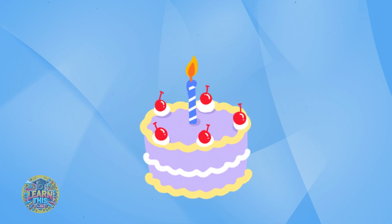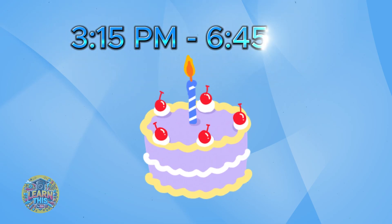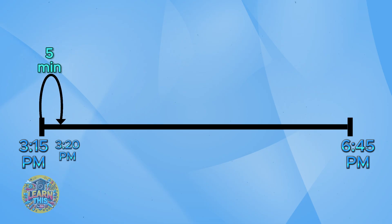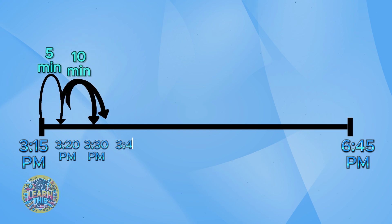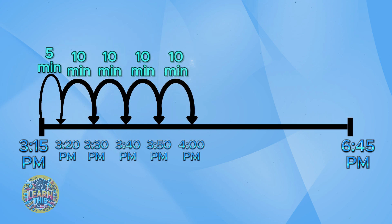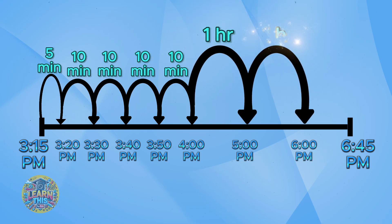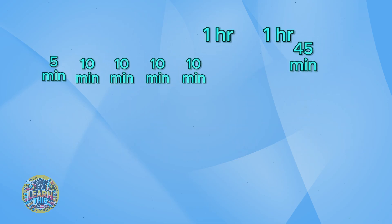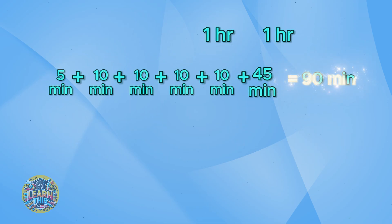Let's do one more together and then I'll have you practice on your own. You're going to a birthday party. The party starts at 3:15 PM and lasts until 6:45 PM. Draw your number line and add your start and end times. Next, count up the minutes until you get to the next closest whole hour. I'll take 3:15 and add five minutes, which takes me to 3:20. Then I'll count by tens until I get to 4 o'clock. Now count up by one hour until you get to the hour of your end time — in this case, 6 o'clock. Now let's add the remaining minutes. When you add them all up, you get a total of 90 minutes.